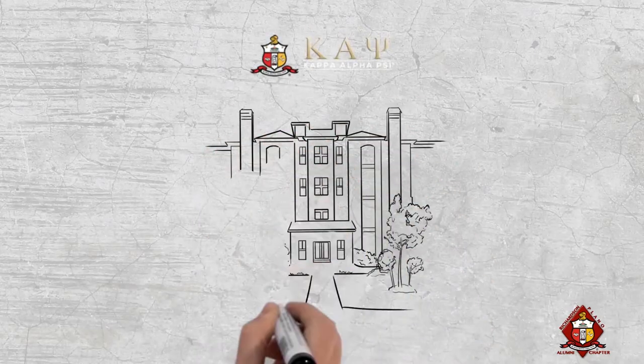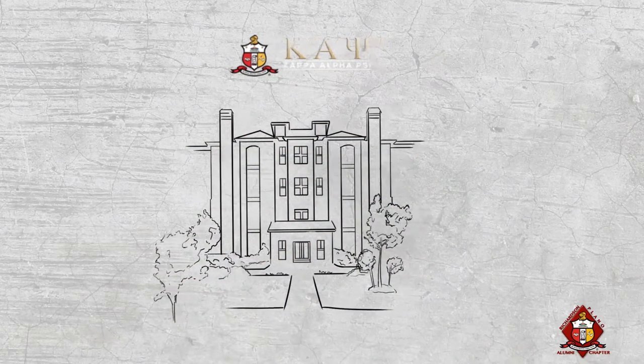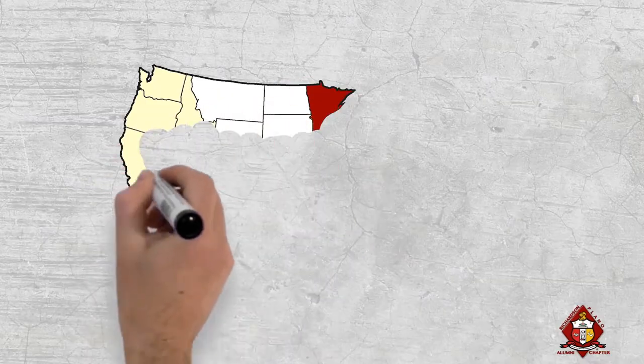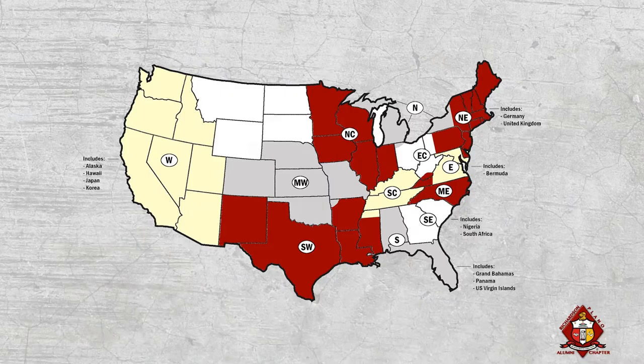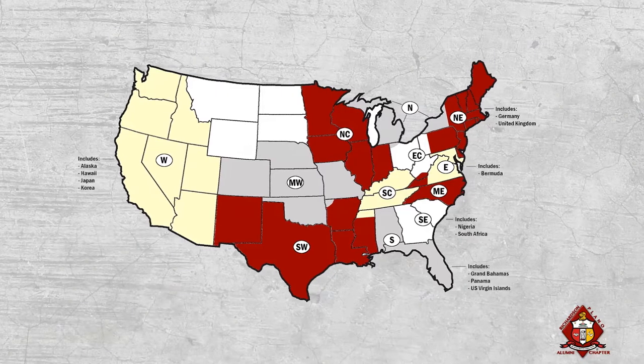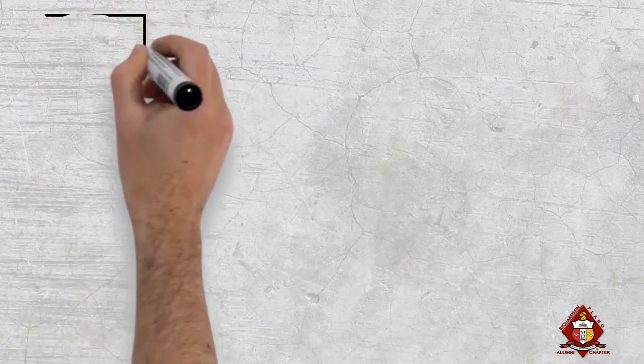Kappa Alpha Psi, a college fraternity, now comprised of functioning undergraduate and alumni chapters on major campuses and in cities throughout the country, is the crystallization of a dream.